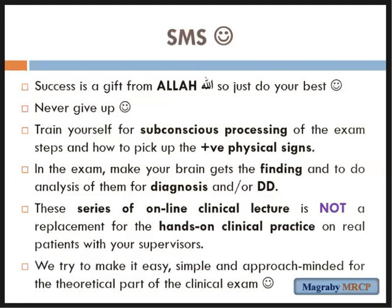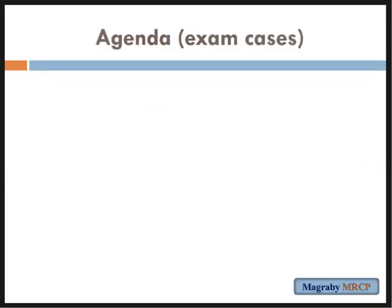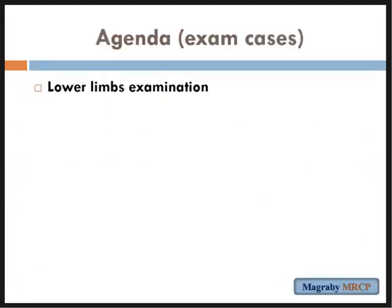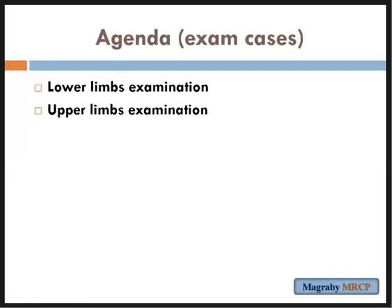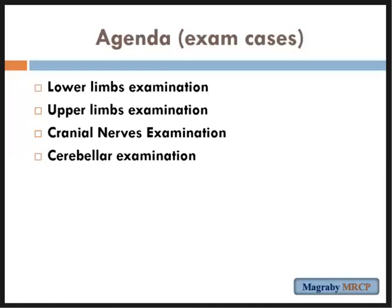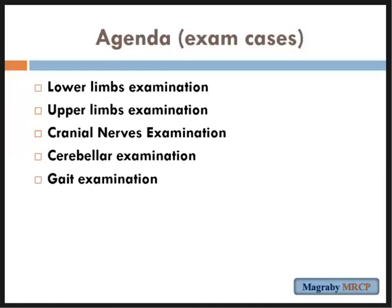We have put an agenda. We need to cover lower limb examination, upper limb examination, cranial nerves examination, cerebellar examination, gait examination, and finally fundus examination. Sometimes fundus becomes a separate station in a short case, or it can be needed in a neurological diagnosis.